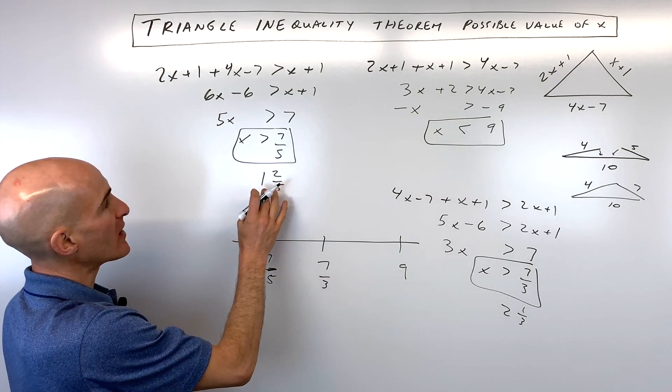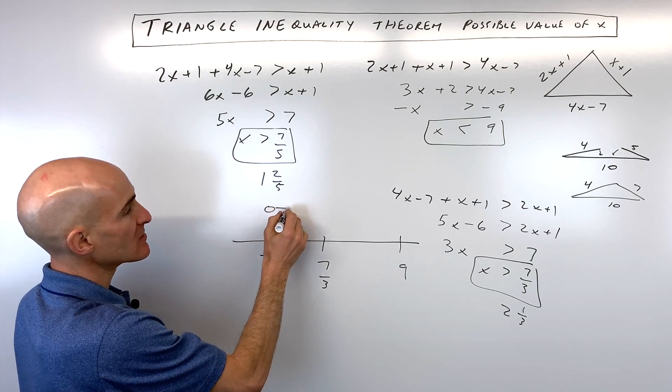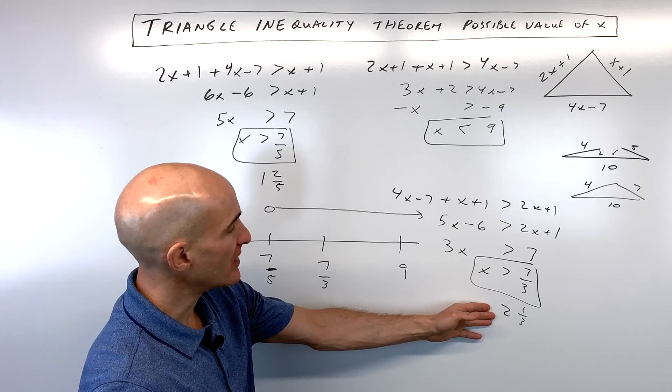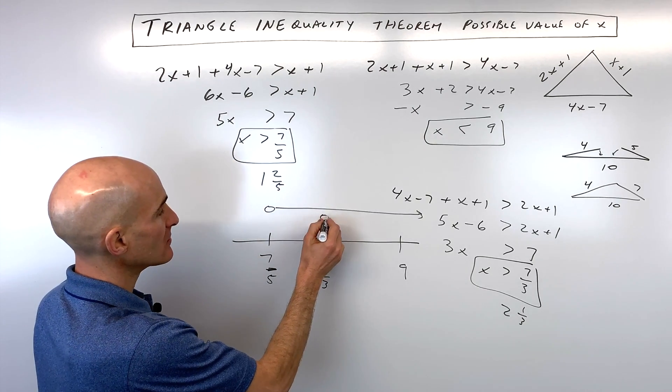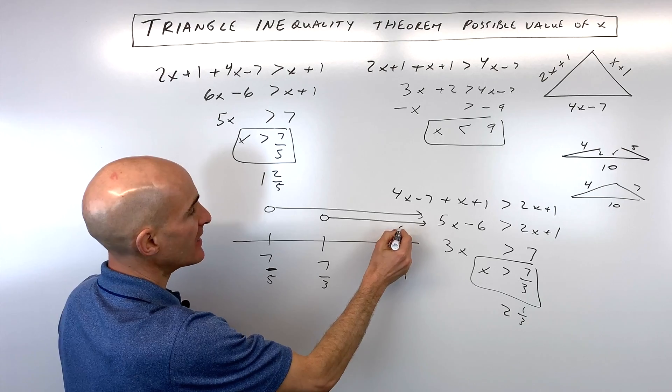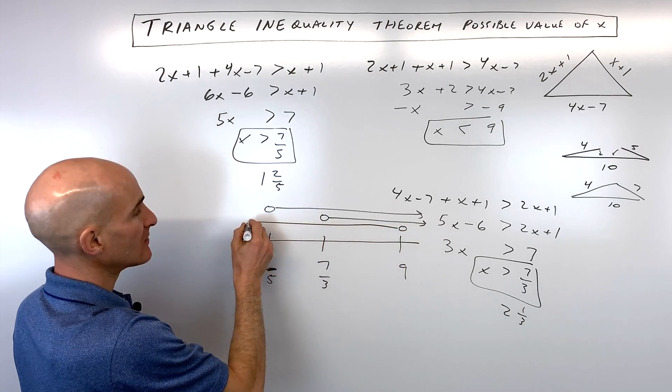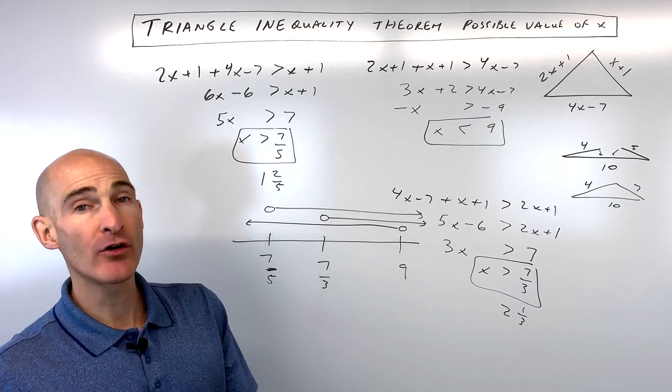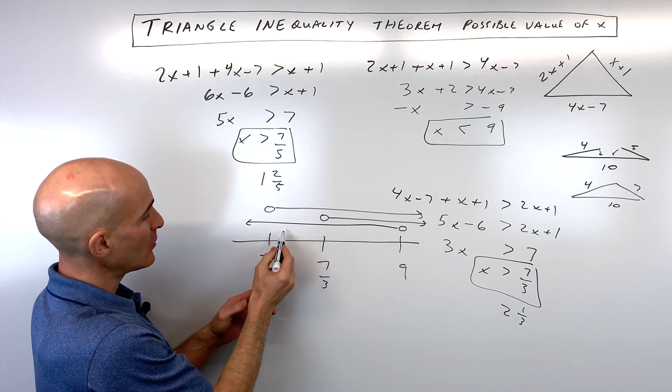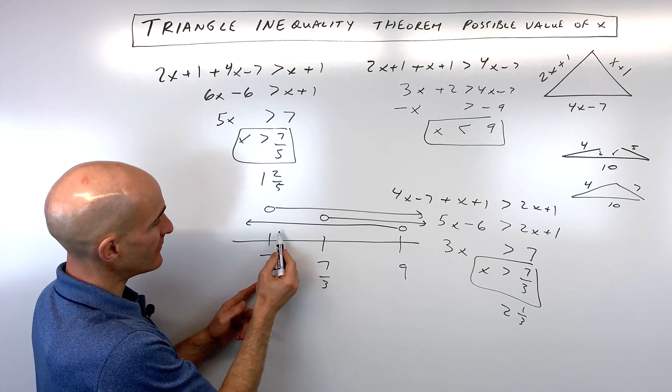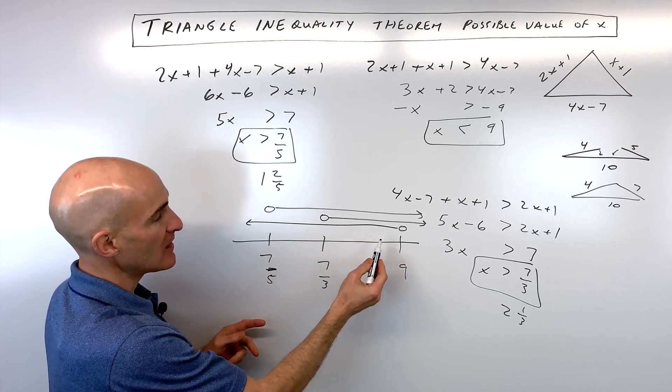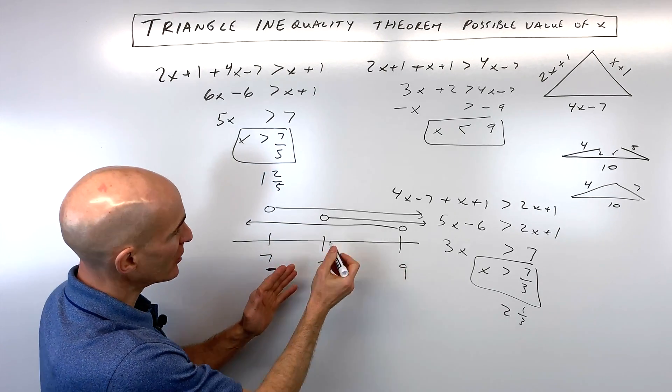Okay, so we want x to be greater than seven-fifths, so greater than means to the right. We want it to be greater than seven-thirds, okay, and we want x to be less than nine. Okay, so now that we've graphed all three of those on the number line, what you want to look for is that overlapping region. So here you can see, if you're over here between seven-fifths and seven-thirds, two of the constraints are satisfied but not this third constraint. So what you want to do is look at where they're overlapping.